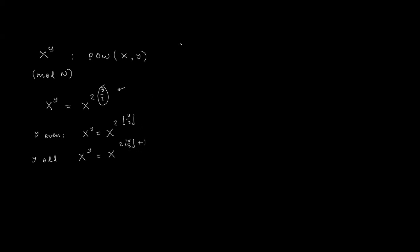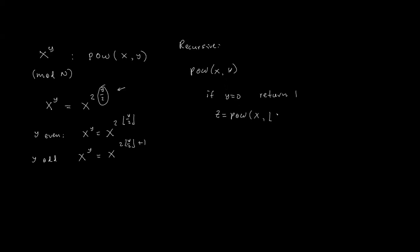So that means we can write a recursive algorithm for exponentiation. It's going to be power(x, y). If y equals 0, then it's x to the 0, so we just return 1. Otherwise, we recursively compute z equals power(x, floor(y/2)).